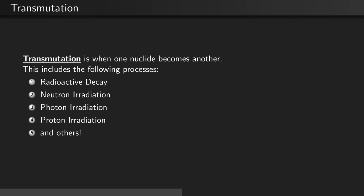Neutron irradiation, where a neutron incident onto the target atom will cause that atom to change into a different nuclide. Photon irradiation, which is where the incident particle is light. Proton irradiation, which is where the incident particle is a proton. And others.